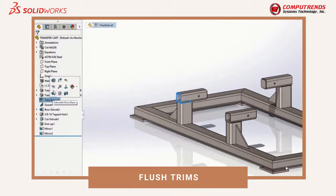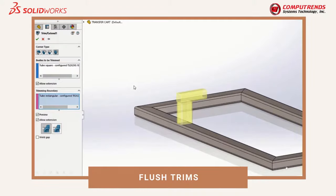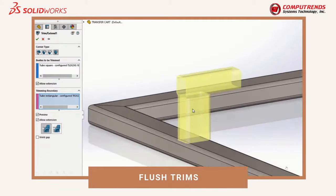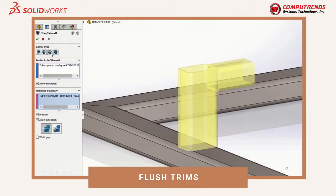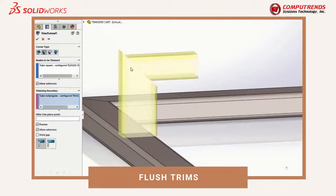The trim or extend weldment tool is used to cut the pipes to each other with different options for the corner type. The two ends of the trims dictate how the tube is trimmed to the other, and the trim miter changes the angle between the two pipes creating an equal trim miter angle.